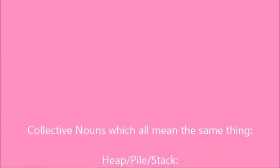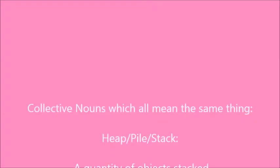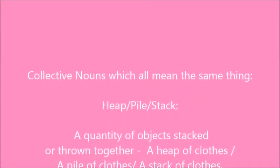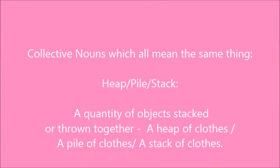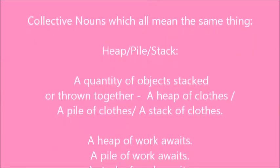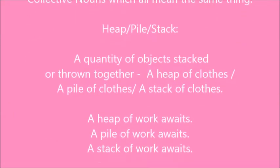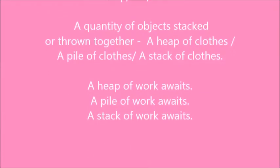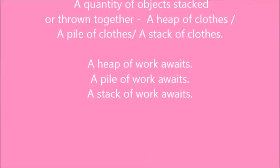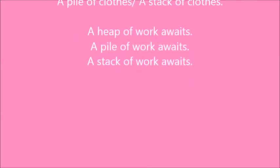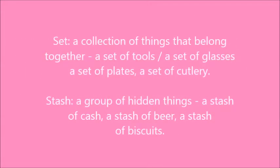There are so many different ones we can have for 'pack'. This is what happens with collective nouns — we use the same collective noun for a lot of different things. You'll also find collective nouns which all mean the same thing, like heap, pile, stack — a quantity of objects stacked or thrown together: a heap of clothes, a pile of clothes, a stack of clothes. A heap of work awaits, a pile of work awaits, a stack of work awaits — you can use the same one.